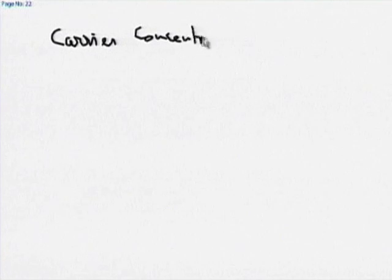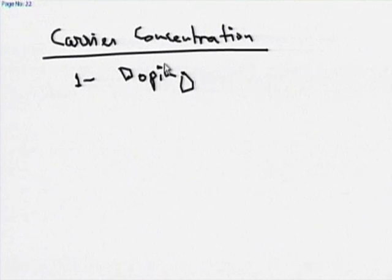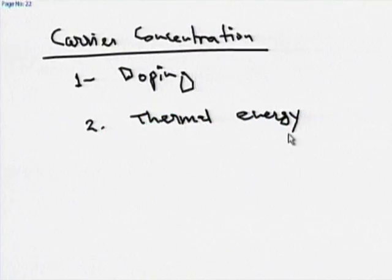Carrier concentration is affected by many things. One is doping — by increasing doping, you increase hole or electron concentration. Another is thermal energy: because of temperature, carrier concentration can increase. The intrinsic carrier concentration is defined at room temperature, but if you increase temperature, more electrons and holes have enough energy to go from valence band to conduction band, so carrier concentration increases.